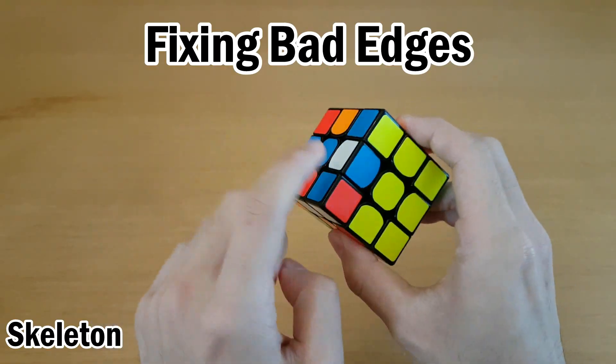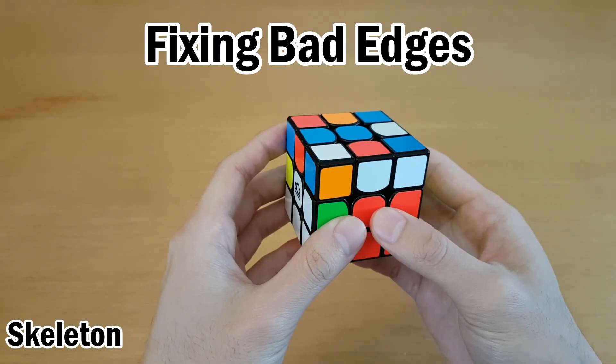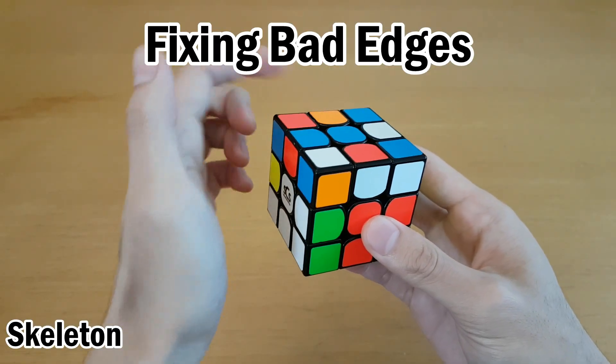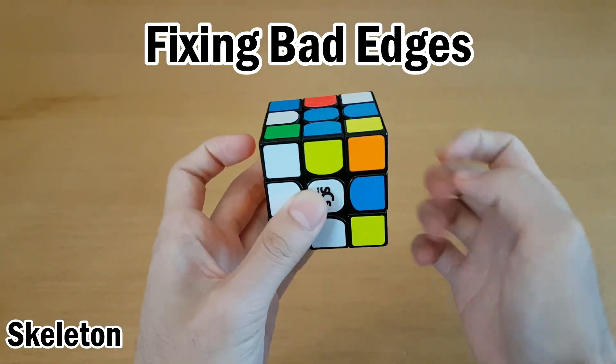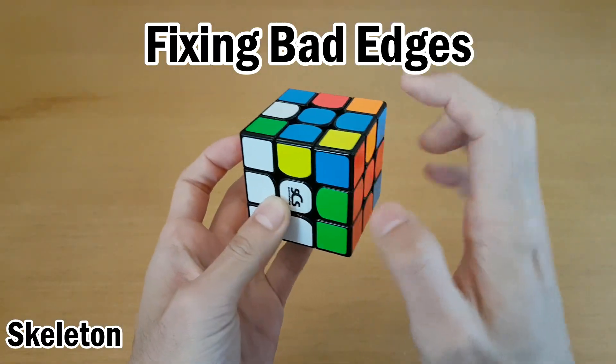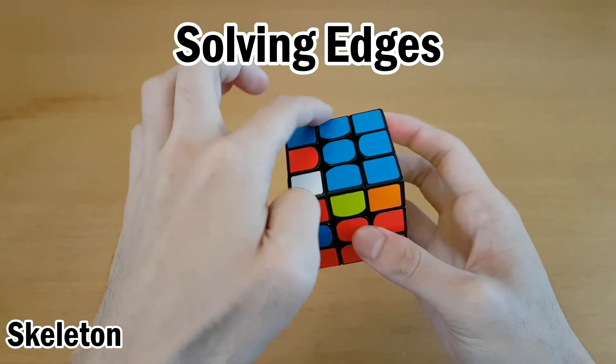Then replace it with any flipped edge, so this one or this one. You can try them both to see which one ends up with a nicer solution in the end. I'll try replacing it with orange, like this. Then we will move orange to the top and replace it with the other flipped edge. But we have to move orange to the top this way to get blue on top. Replace it with this one, and then come back down.